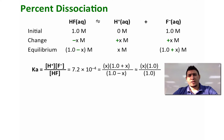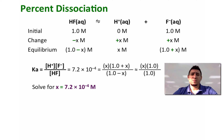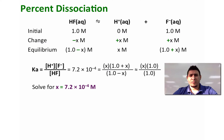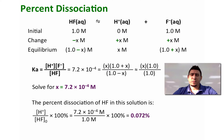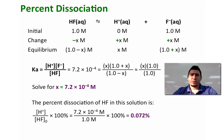If we solve for x, x is equal to 7.2 times 10 to the power minus 4 molar. As you can see, this value is too small compared to 1, so we can safely neglect it. This x equals the concentration of H plus. The percent dissociation of HF equals the concentration of H plus divided by the initial concentration of HF multiplied by 100 percent, which gives 0.072 percent.